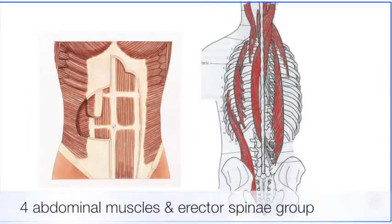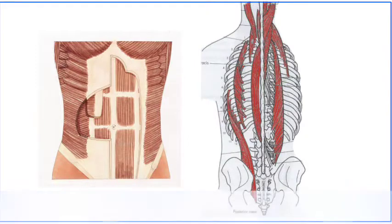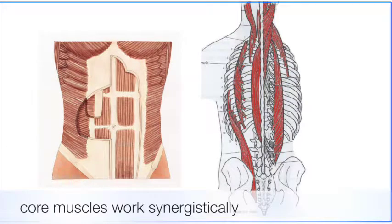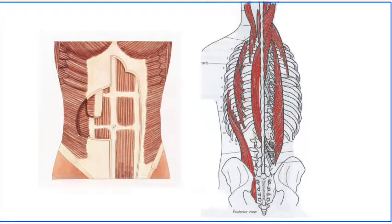We're looking at four different abdominal muscles and the erector spinae muscle group. There are other muscles of the core that we're not going to discuss here. Note that all core muscles work synergistically in all our daily movements. However, in this video, we're going to discuss them individually and simplistically for learning purposes.